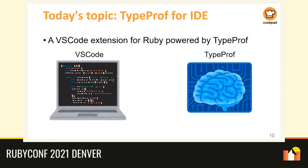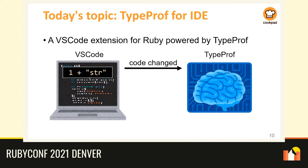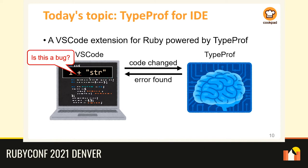TypeProf for IDE is a VS Code extension for Ruby. It uses TypeProf as a backend. Assume that you are editing Ruby code in VS Code — TypeProf for IDE monitors VS Code and notifies all code changes to TypeProf in real time. In this example, TypeProf notices that 1 plus a string will raise an exception when executed. It reports the possible type error to VS Code, and VS Code shows it to users by drawing a red underline.